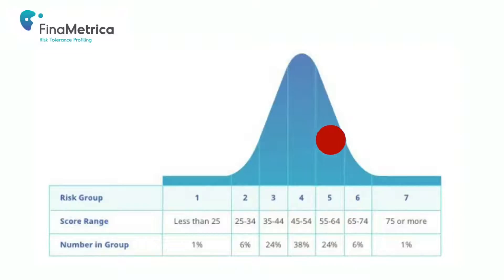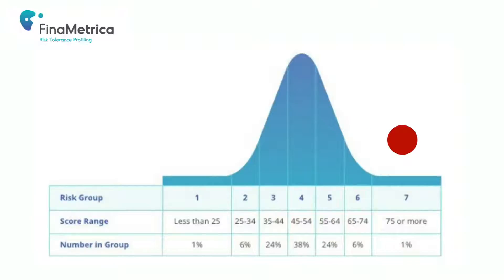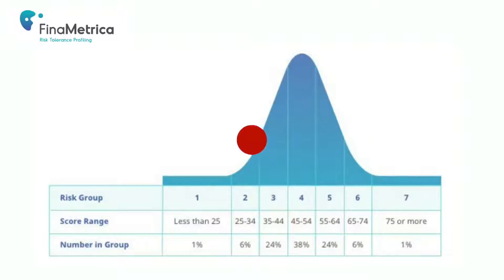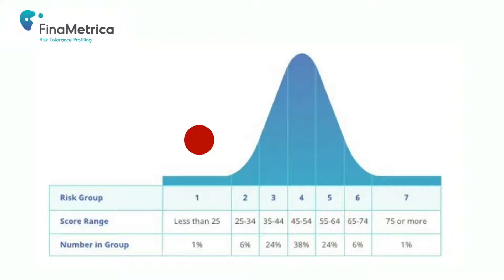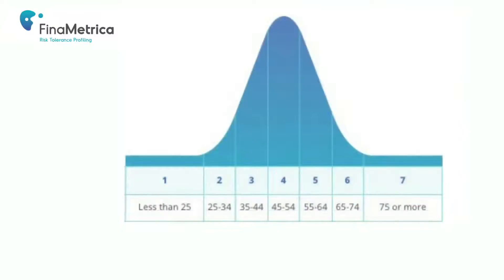To the right of the bell curve we see higher risk score people. Group five scores range from 55 to 64, but only 24% of people fit into this group, compared to 38% in group four. Further right, group six are big risk takers with scores of 65 to 74, representing only 6% of people. Group seven scores are extraordinarily high — over 75 — but only 1% of people will ever score that high. To the left, group three is more conservative with scores between 35 and 44, representing 24% of people. Group two are very conservative with scores of 25 to 34, representing only 6% of the population. At the extreme, group one scores less than 25, representing only 1% of the population.